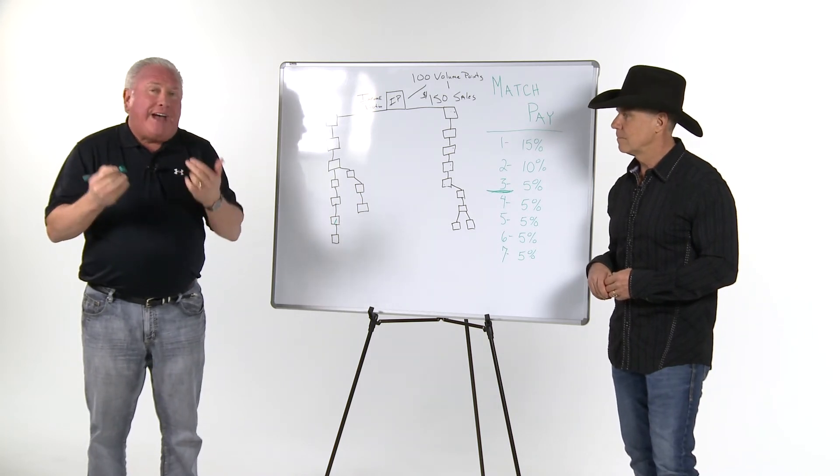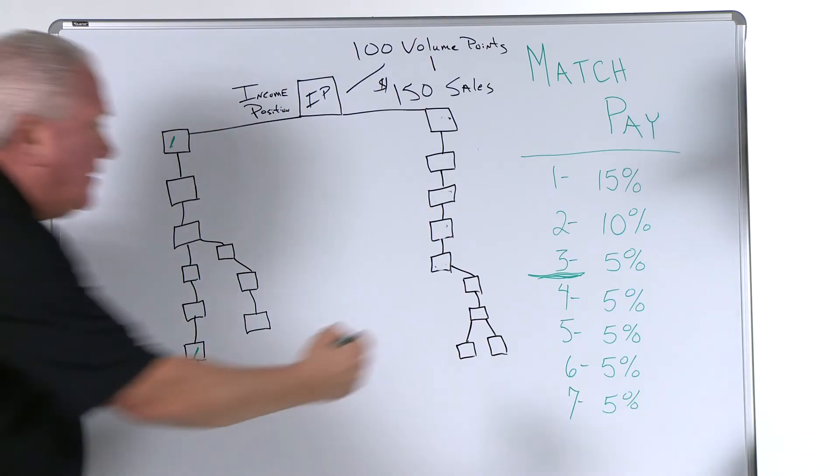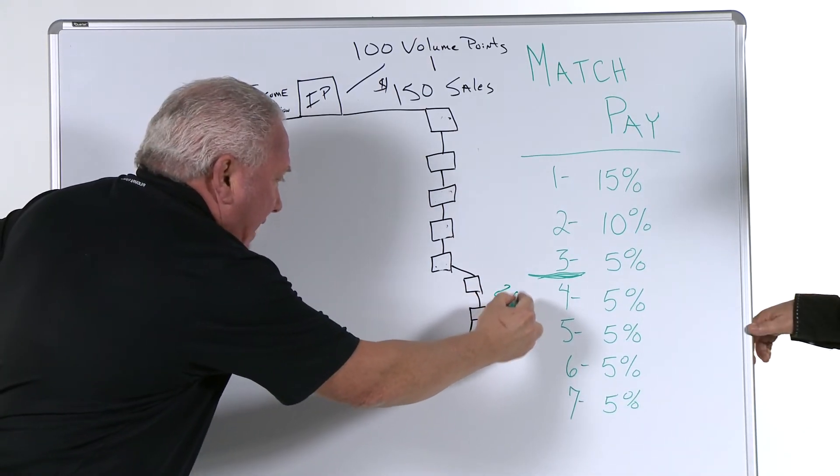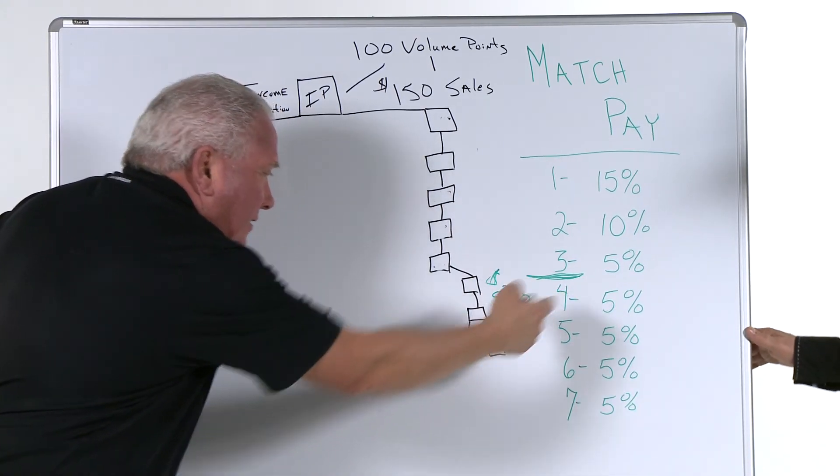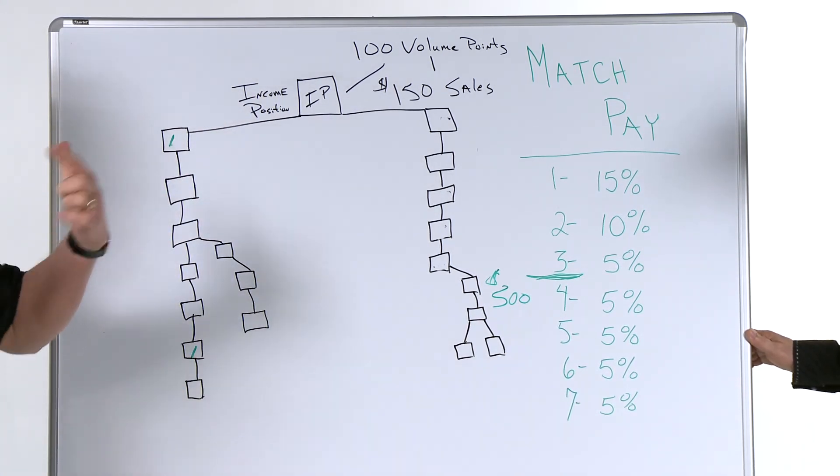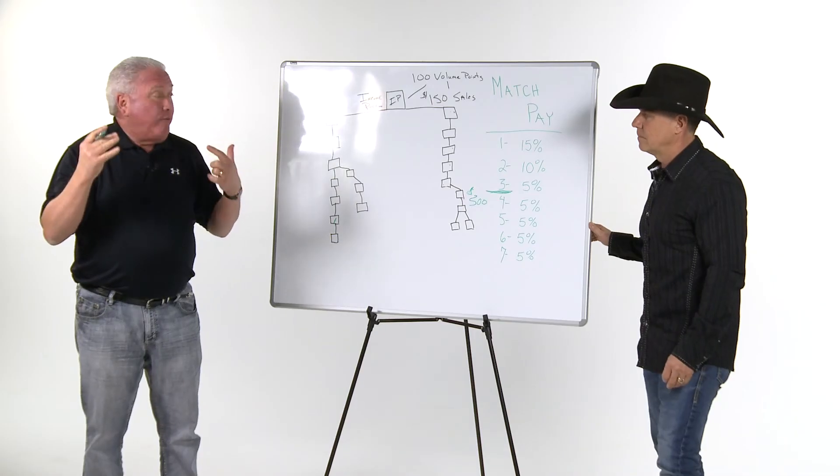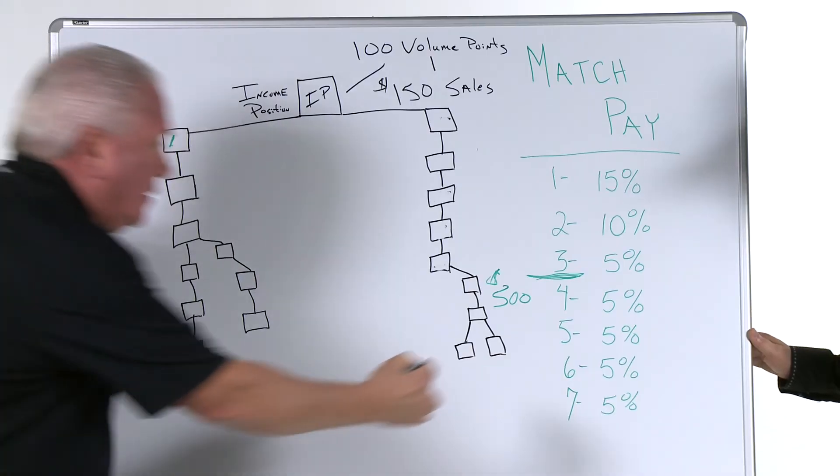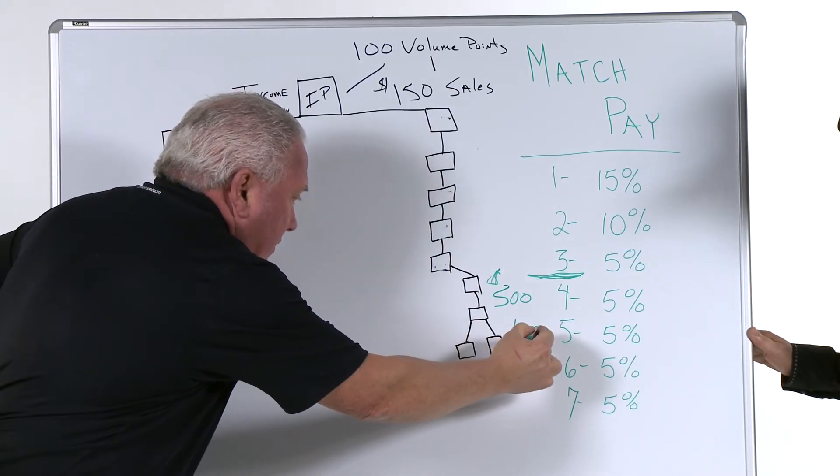In level four you must earn $500 a week in base commissions to get level four. And at level five it's $1,000 in base commissions, and $2,000 for level six, and $4,000 for level seven.